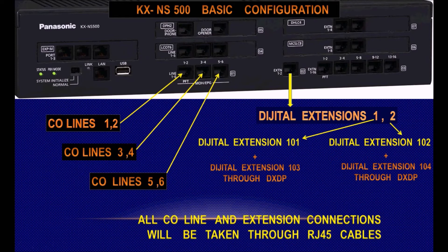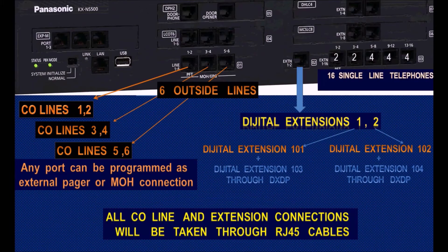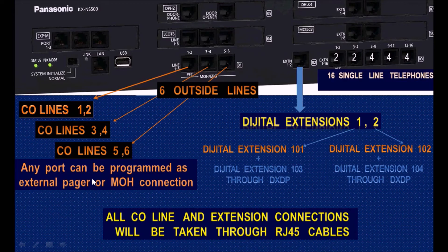All connections for CO lines, music on hold, and external pagers use direct or standard RJ45 cables. For analog CO line ports, any port can be programmed as an external pager or music on hold source, and it comes by default configured for analog CO line connection.